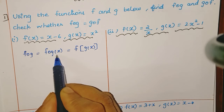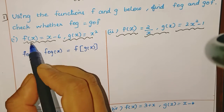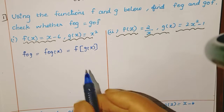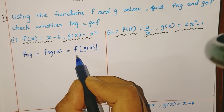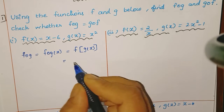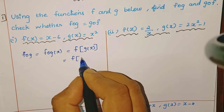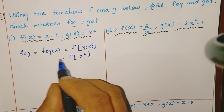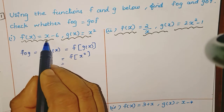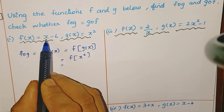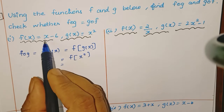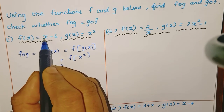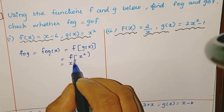So g of x is the function, and it is given as input to function f. Now, g of x is x squared, so we write g of x as x squared inside the bracket. This x squared becomes our input. For function f, wherever x appears, we replace it with x squared. So f(x²) = x² minus 6. That is the answer for f composition g.